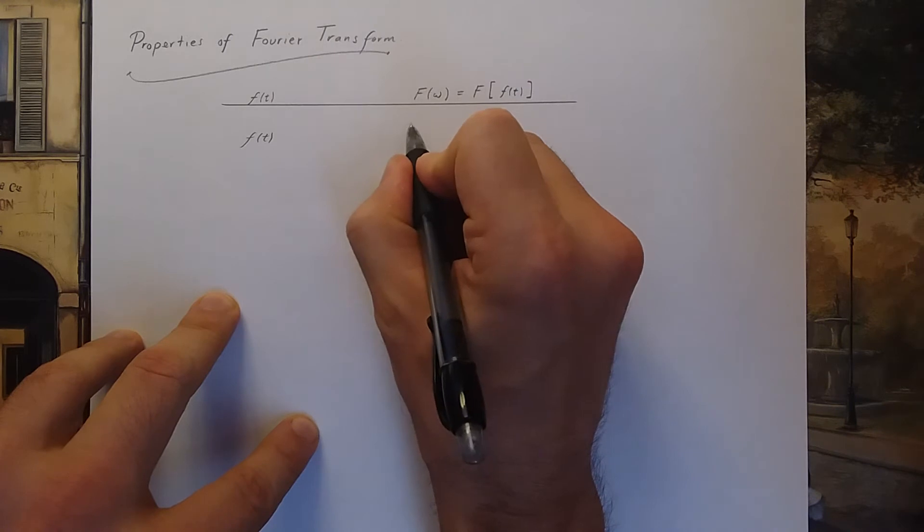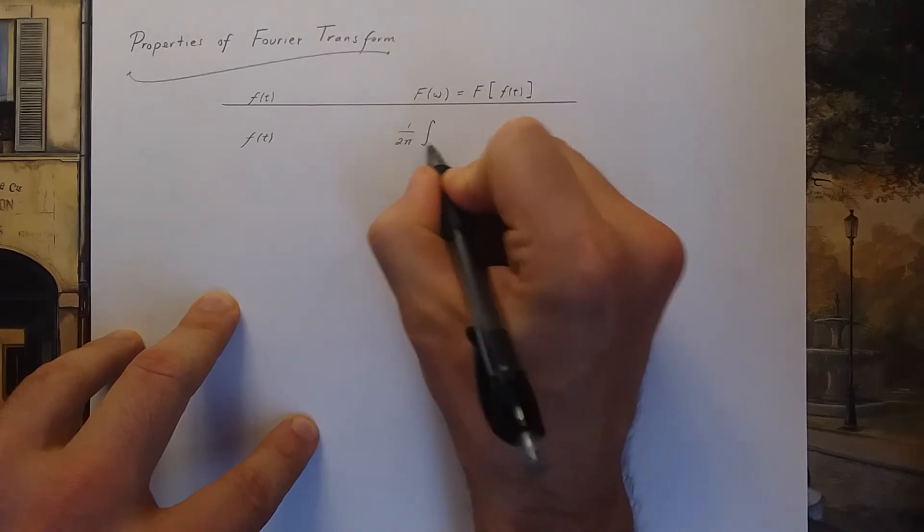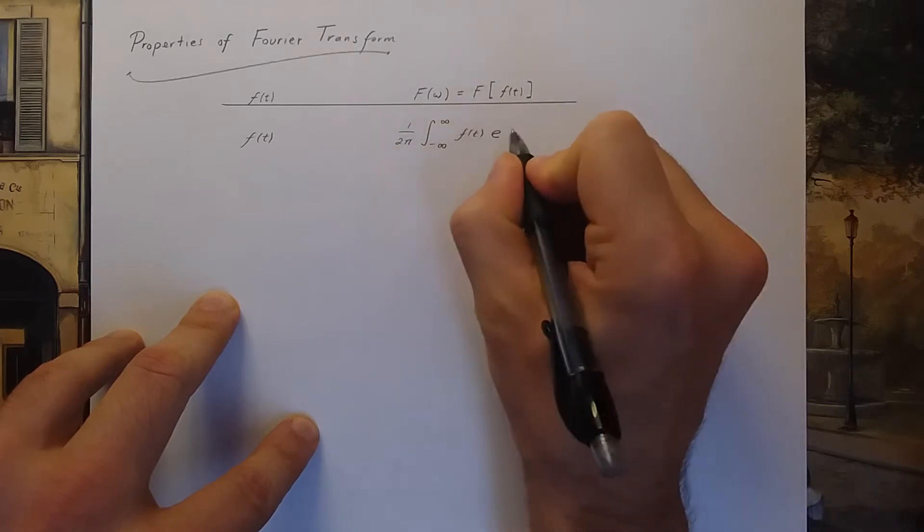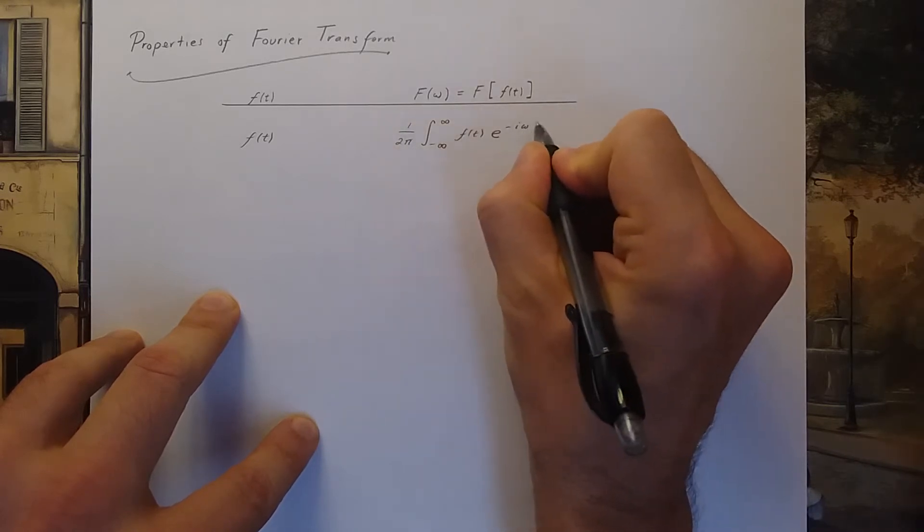So the definition of the Fourier transform is 1 over 2 pi, the integral from negative infinity to infinity, of your function times e to the negative i omega t dt.